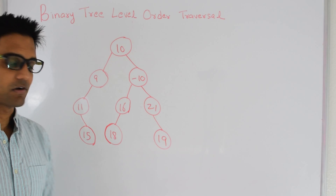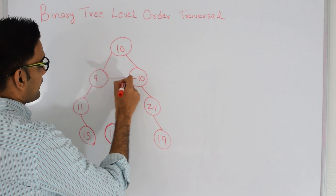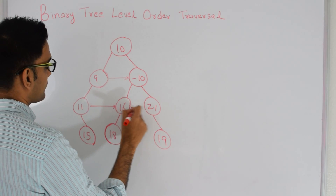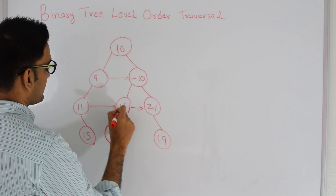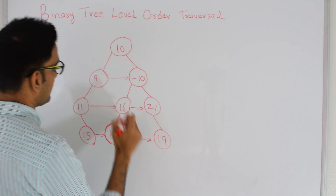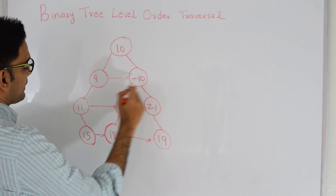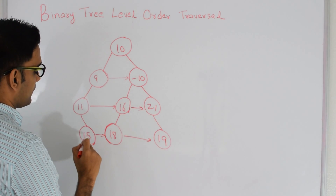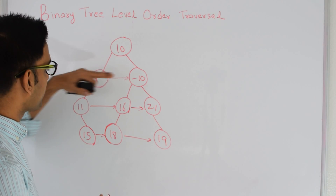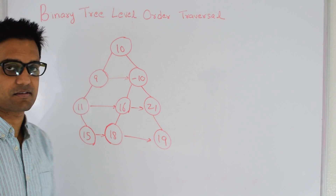Today we're going to look at level order traversal, which starts on 10, then goes 9 and -10, then 11, 16, 21, and finally 15, 18 and 19. So it prints in the form: 10, 9, -10, 11, 16, 21, 15, 18 and 19. Notice how we first print the entire level before going into the next level.